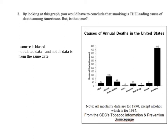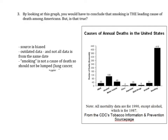The next thing to realize is that when you look at these causes of death — alcohol, motor vehicle, drugs, suicide — smoking actually isn't a cause of death. No one is going to write on a death certificate that somebody died of smoking. What they're going to write is that they died of lung cancer, emphysema, pulmonary obstructive disorder, asthma, etc. All of these types of deaths can be caused by smoking, but smoking itself is not a cause of death.